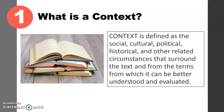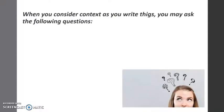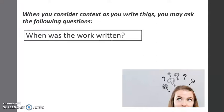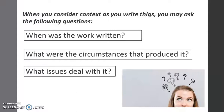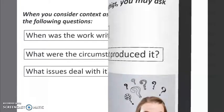Knowledge of the text context helps us in appreciating the text's message more deeply. In discovering a text's context, you may ask questions like: when was the work written, what were the circumstances that produced it, and what issues does it deal with? When using context, try to represent several perspectives by citing different sources.